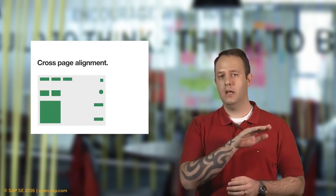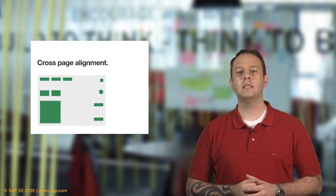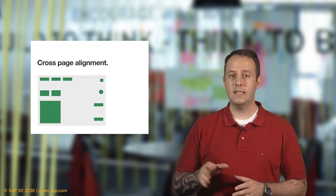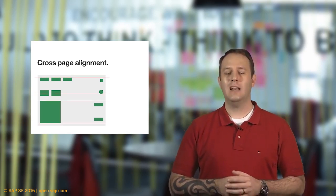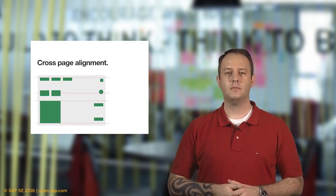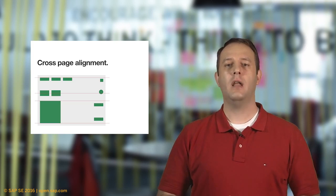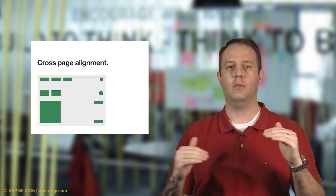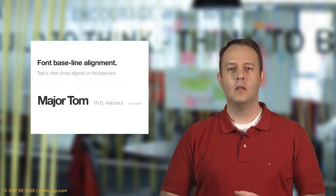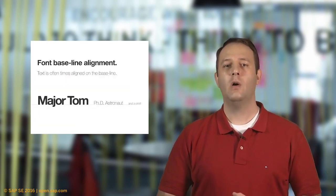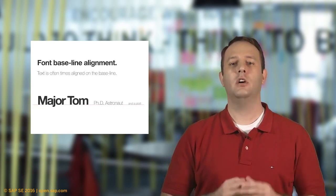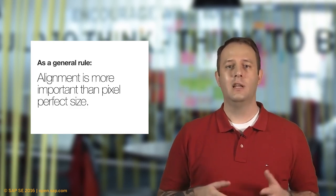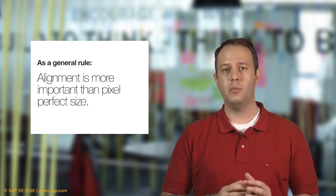The same concept applies in cross-page alignment. If you look across to the right side of the screen, occasionally those elements fall out of alignment. It's important to keep an eye on that and align them properly where required, either along the top, central, or bottom line. Text alignment can differ from one design to another; however, in most cases, text will be aligned on the bottom baseline of the text.